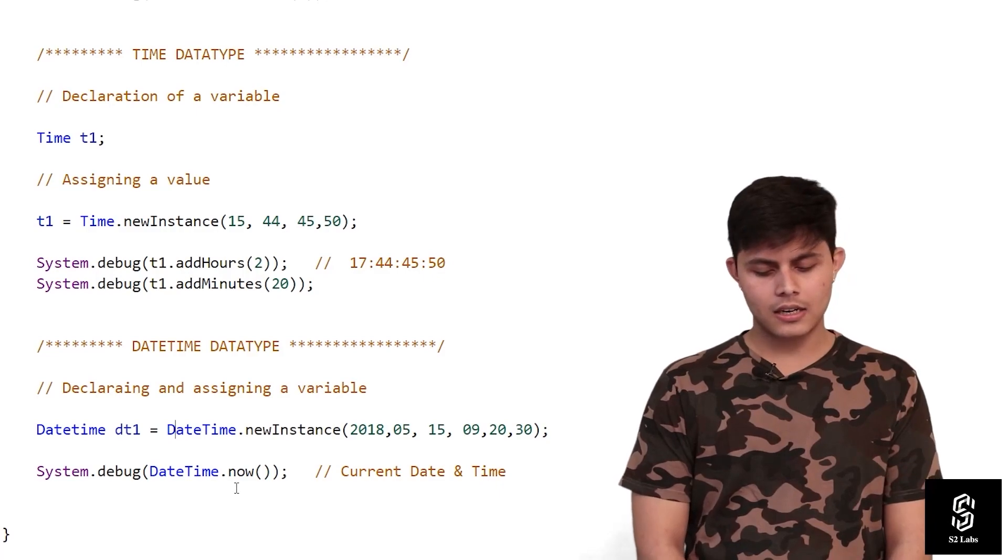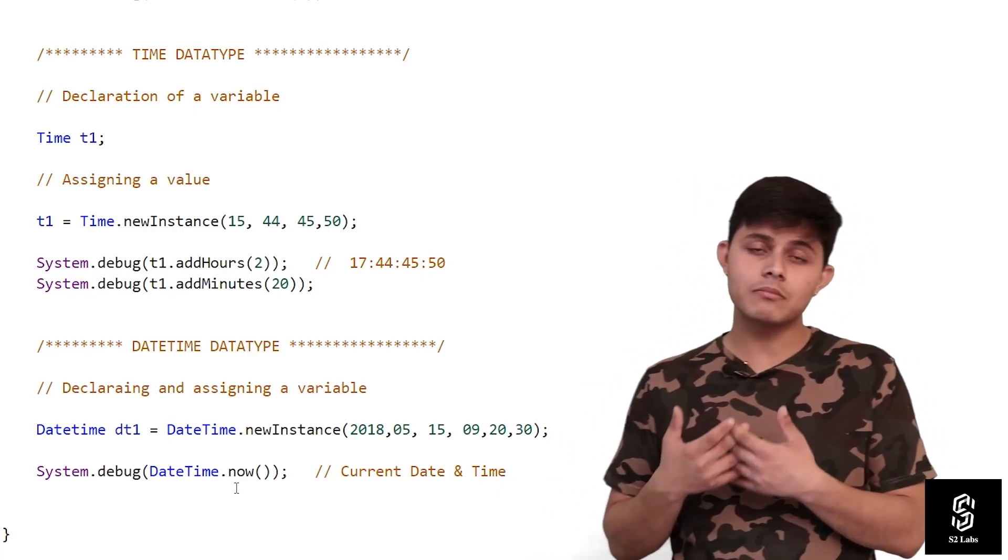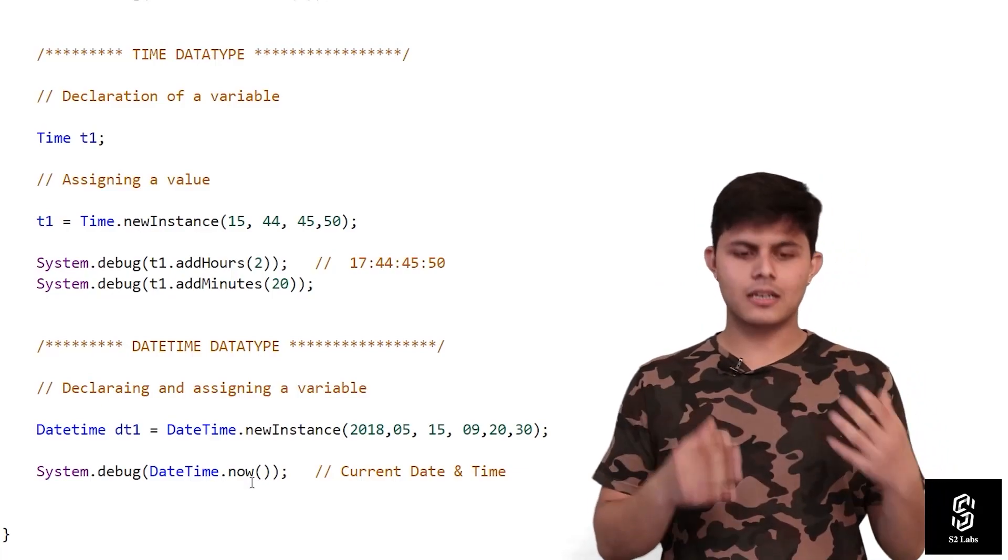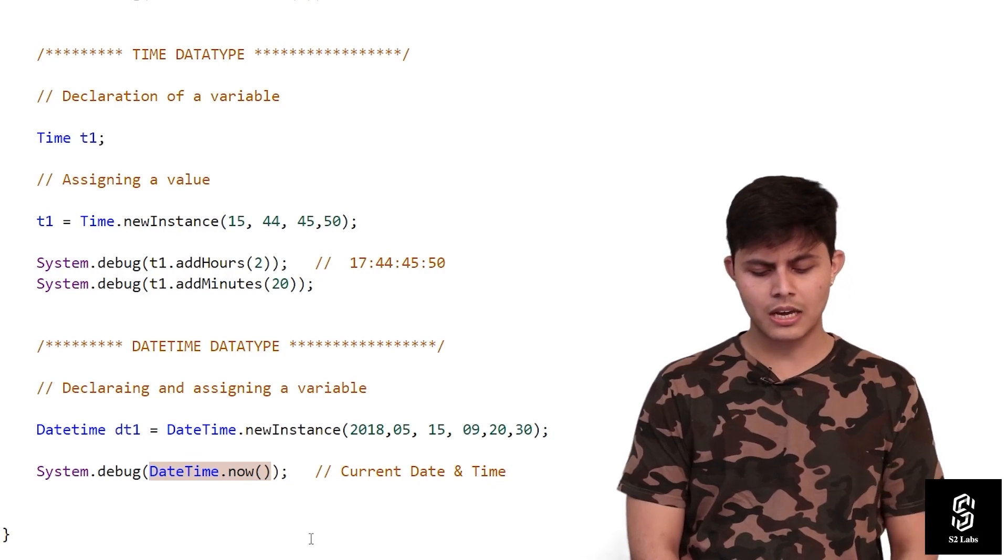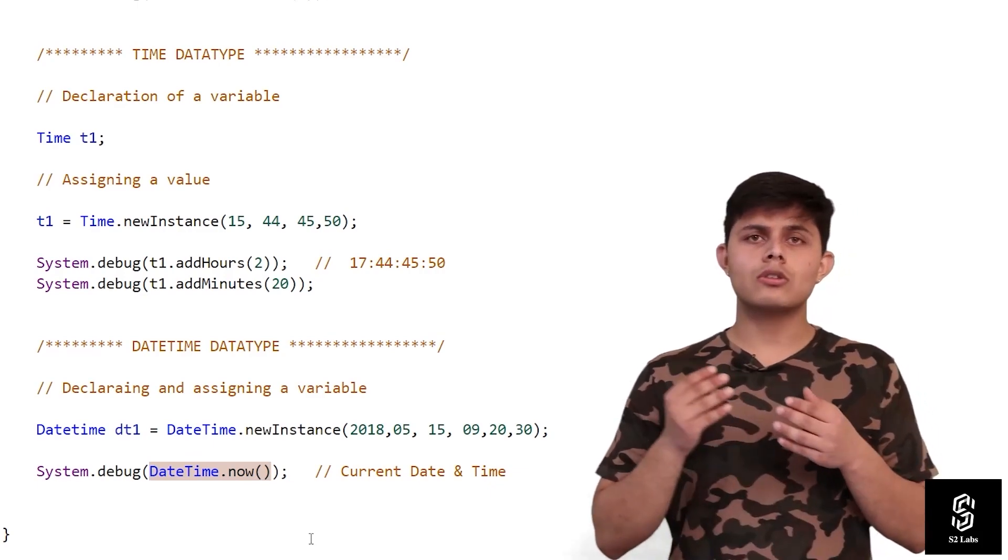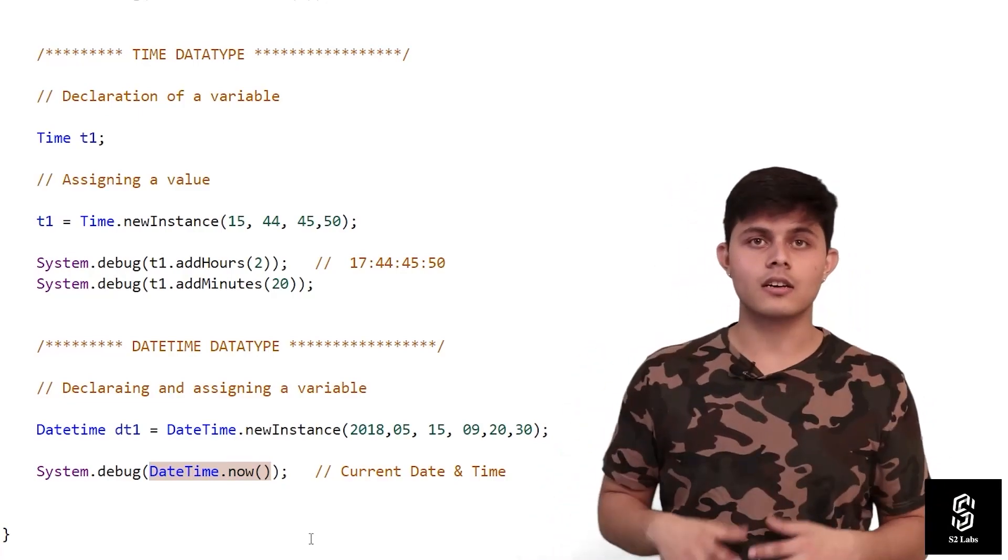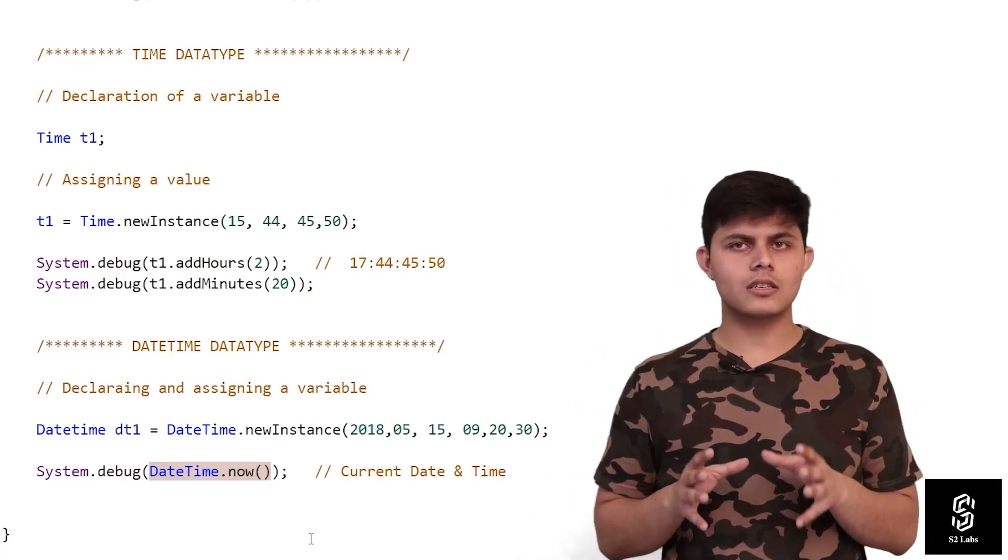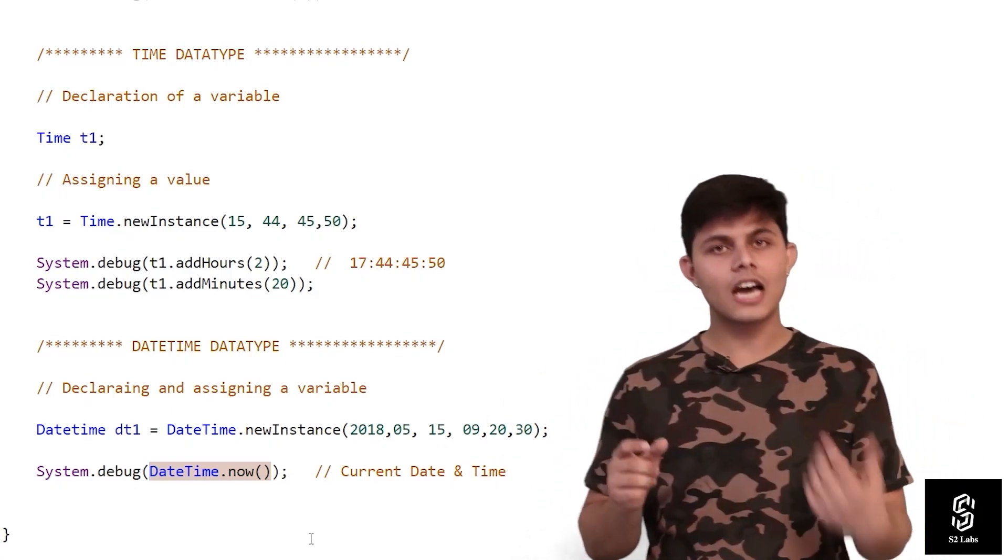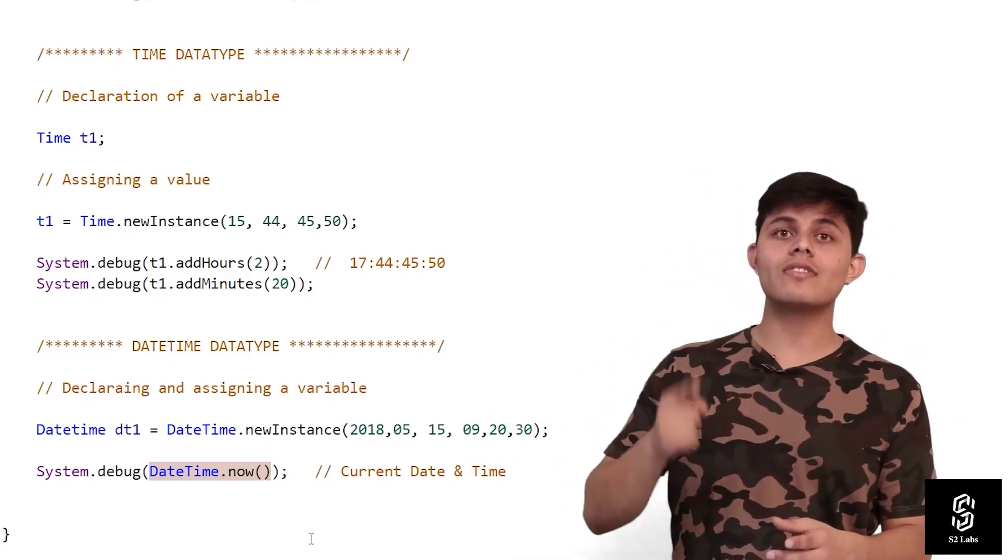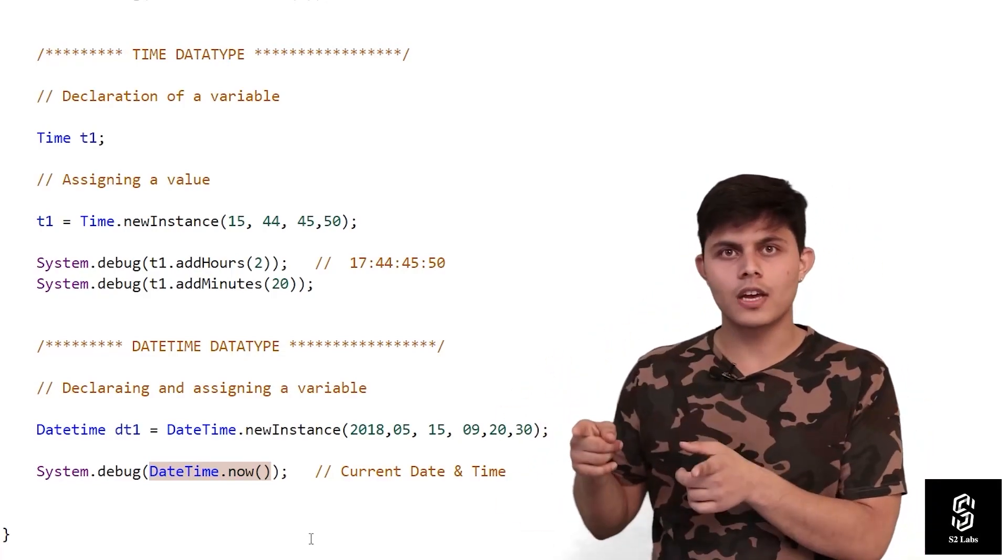There are many other methods with the DateTime data type. A common method we use frequently is DateTime.now(). Note that Date.today() returns the current date, while DateTime.now() returns both the current date and current time into a DateTime data type variable.